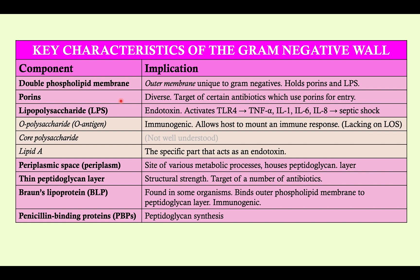There are three major components of lipopolysaccharide. First is the O-antigen or O-polysaccharide, which is immunogenic — meaning the immune system can mount a response and create antibodies to it. This is lacking on lipo-oligosaccharide, which is one way Neisseria can partially evade an immune response. The core polysaccharide is not well understood, so you don't need to know much about that. And then there is Lipid A — the component of lipopolysaccharide that acts specifically as the endotoxin, eliciting that massive cytokine response and ultimately leading to sepsis.